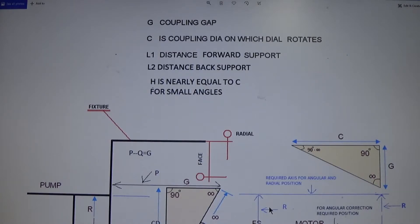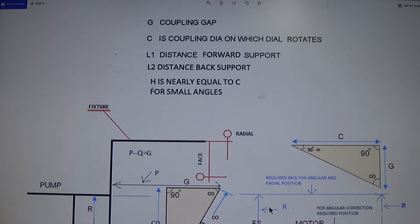G is the coupling gap, which is your angular reading. G is the coupling diameter on which the dial rotates. L1 is the distance from the forward support, and L2 is the distance from the back support.